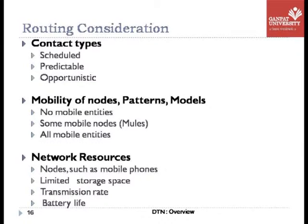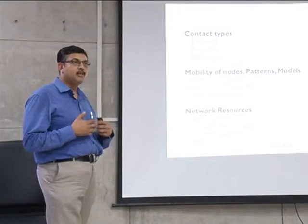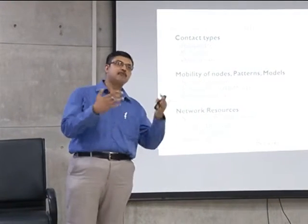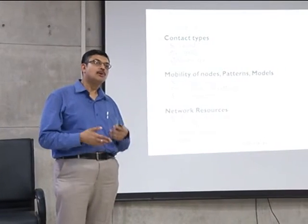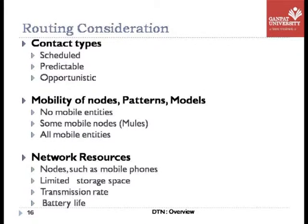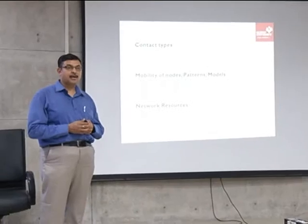There are disconnections in the network, and to improve upon them, we rely on contacts. When nodes come into contact, there are opportunities to relay the message. Contact types are: scheduled — for example, this session has been scheduled from 3 to 5, everyone knows about it, and within that definite time a set of nodes can exchange messages. Predictable — not scheduled, but some event happened in the past and from that we forecast the future.